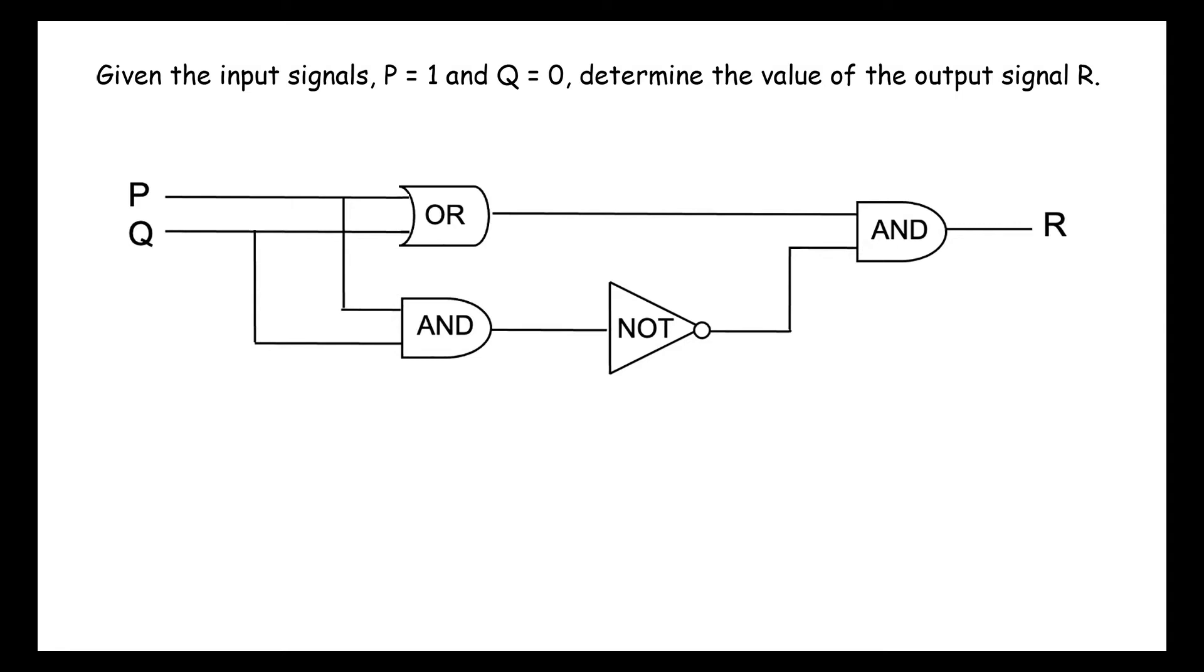In this video, we learn how to determine the value of the output signal for a simple circuit. Given the input signals p equals 1 and q equals 0, determine the value of the output signal R.